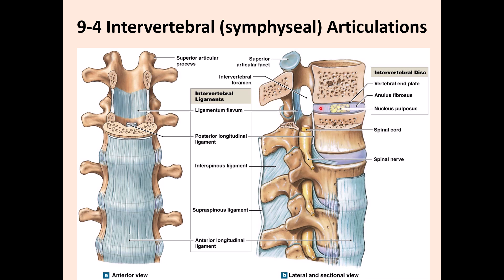When the annulus fibrosus is damaged — due to age, trauma, or heavy lifting — the disc can herniate. The spinal cord is located inside the vertebral canal. If a disc herniates posteriorly or laterally, it can compress the spinal cord or a spinal nerve, causing severe pain or even paralysis. Anterior herniation may cause less severe symptoms.